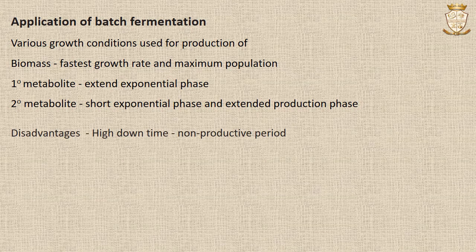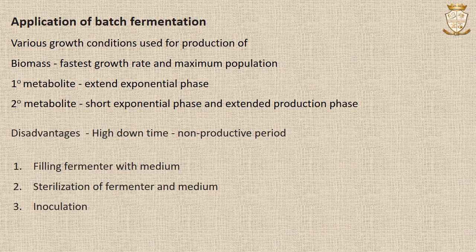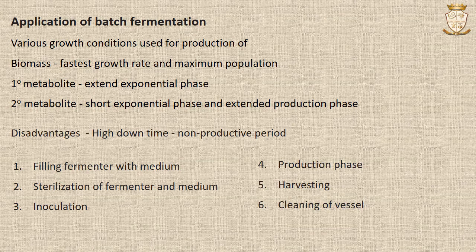Batch fermentation possesses several disadvantages since several distinct stages are associated with its operation. These stages are: filling the fermenter with fresh medium, sterilization of the fermenter medium, inoculation of the fermenter, production of microbial products, harvesting of biomass and spent broth, and cleaning of the vessel. Due to these different stages, for a considerable period of time the fermenter vessel is not producing any microbial product but is being cleaned, filled, sterilized, etc. This has serious economic implications. This non-productive period is referred to as the downtime of the fermenter, and the downtime is very high for a batch fermenter.